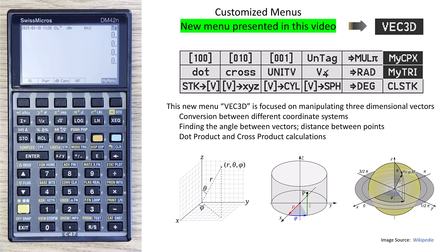In this video, I am going to introduce a new custom menu in the C47 calculator. This menu is called Vector3D, and it's put in place to help me manipulate 3D vectors to convert between coordinate systems, for example, Cartesian to cylindrical to spherical.